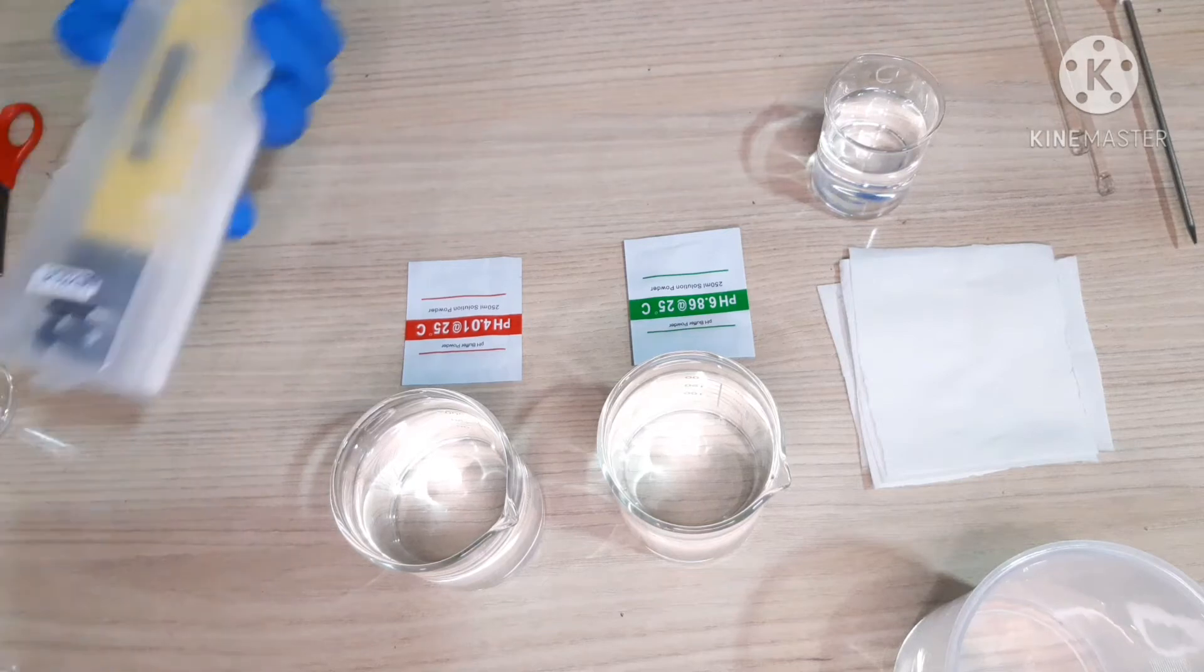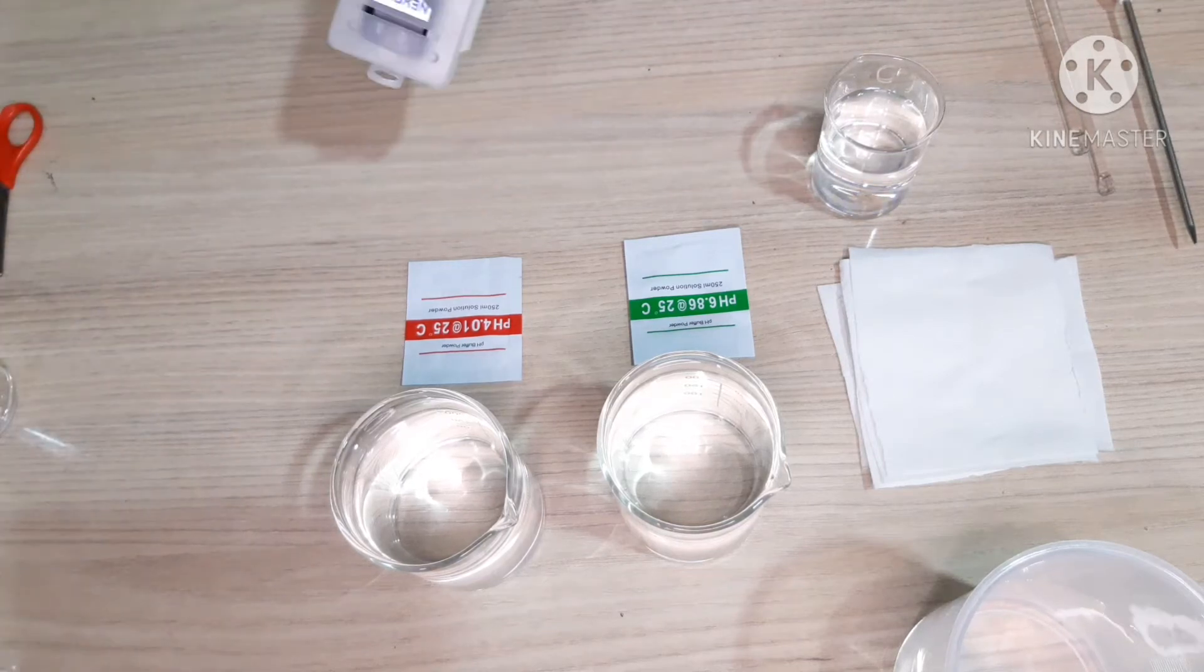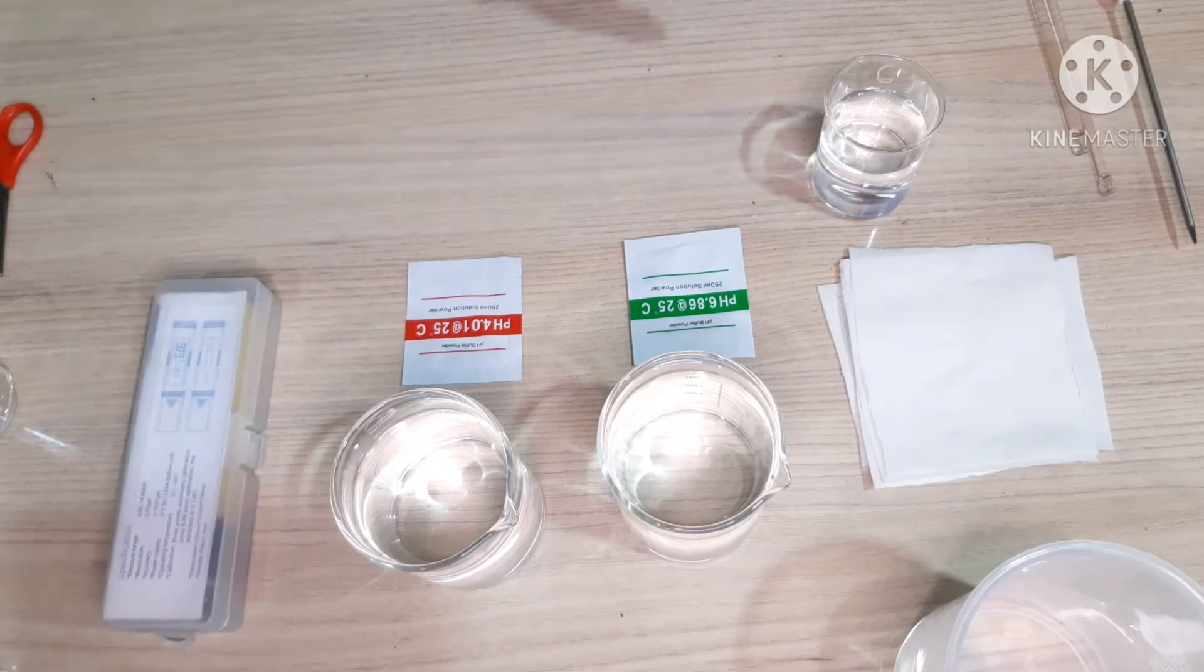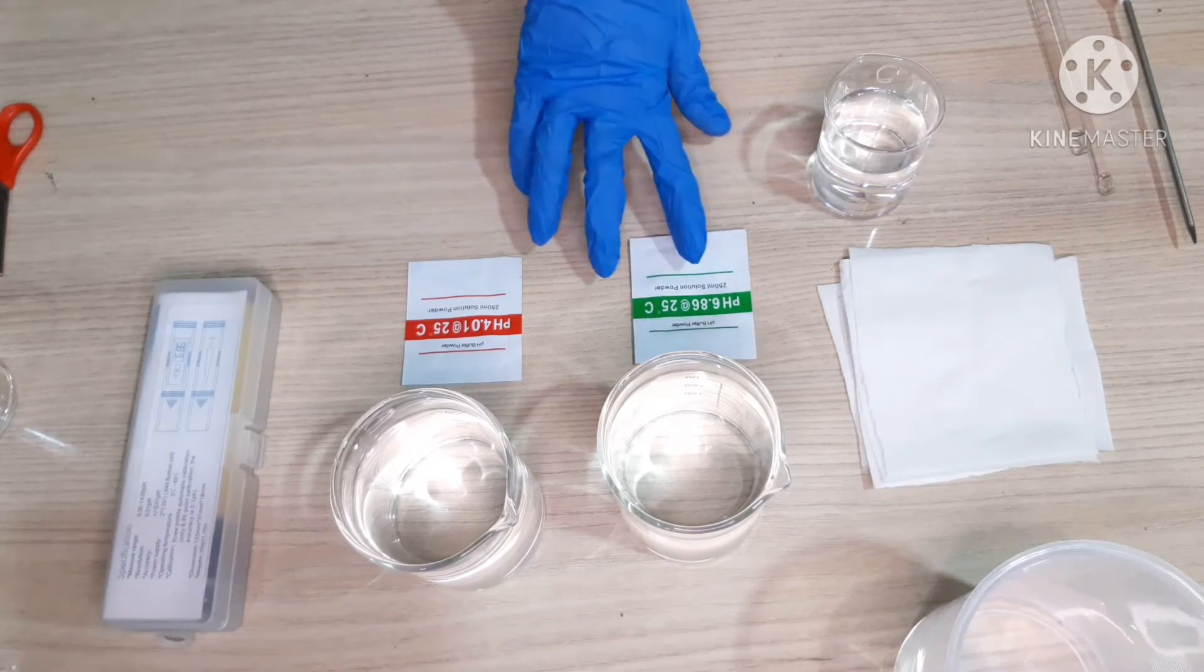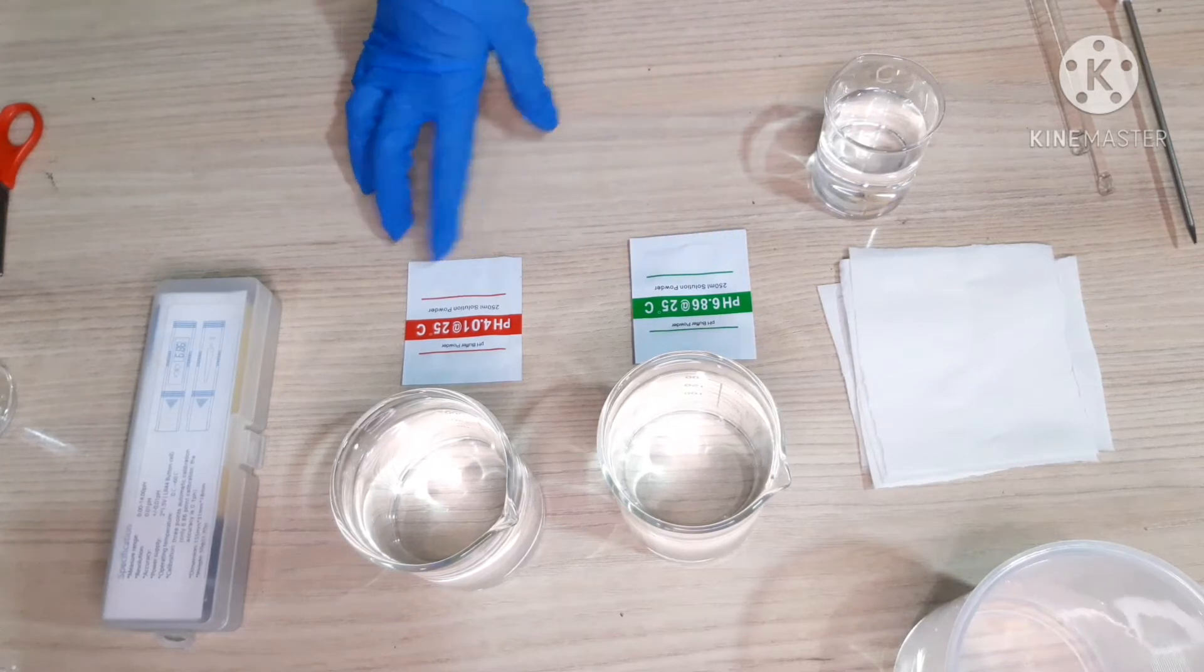We will be calibrating the pH meter today. I have been using it for some time now. I have got these buffer powders from Amazon, one pH 6.86 and another one is 4.01.